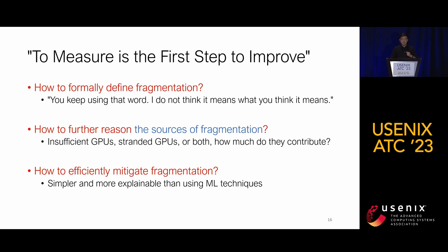Second, given the definition, can we further reason about the sources of fragmentation — for example, insufficient GPUs, stranded GPUs, or both — and how much each contributes? Third, can we effectively and efficiently mitigate fragmentation? Since the scheduler needs low latency and explainable solutions, rather than just applying machine learning techniques to machine learning workloads.